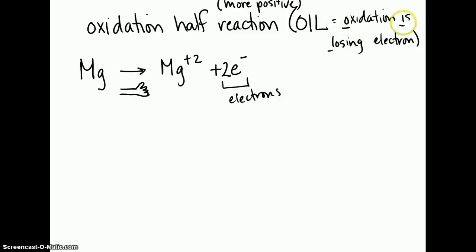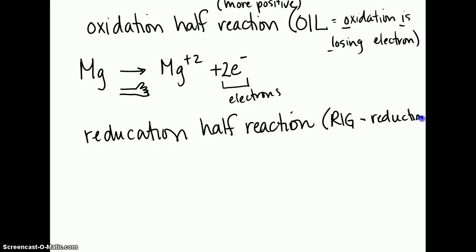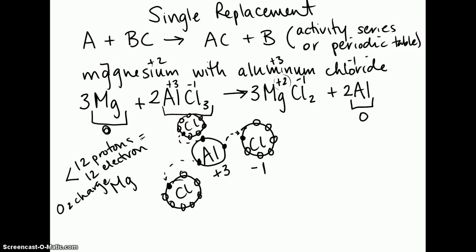Remember it started as a zero charge. And the way that I remember it is sort of seeing that arrow as a hand. And it threw out two of its electrons. That's why you have the hand there. And we write electrons with a negative charge. So it threw out two electrons to make this a positive charge. And as oil says, oxidation is losing electrons. So whenever you lose the electrons, you put them in the product side. The other type of reaction is called a reduction half reaction. And in this one, I call it rig. This one is reduction is gaining.